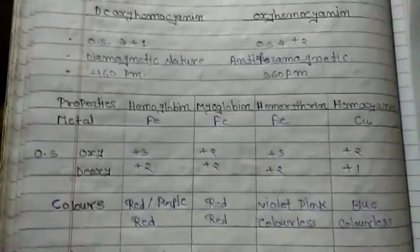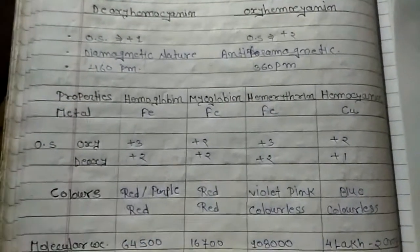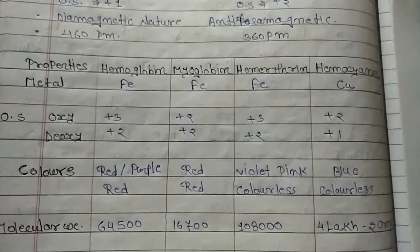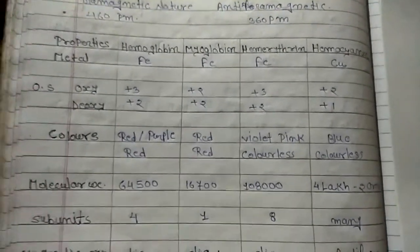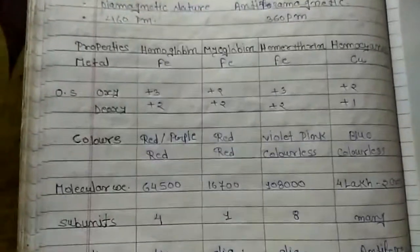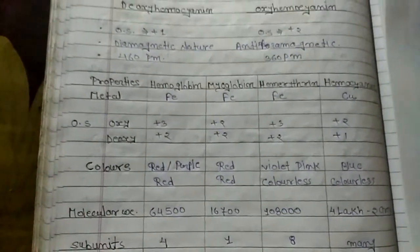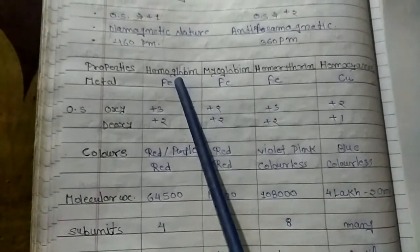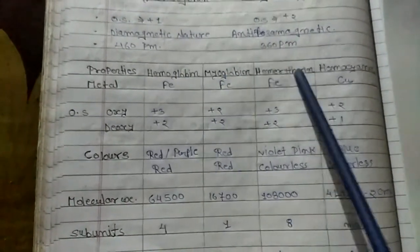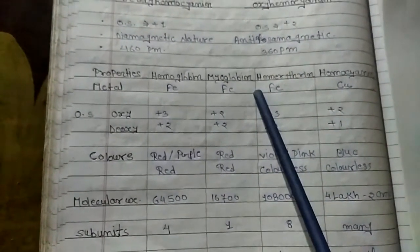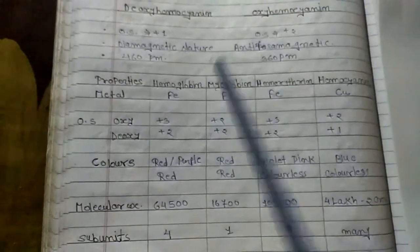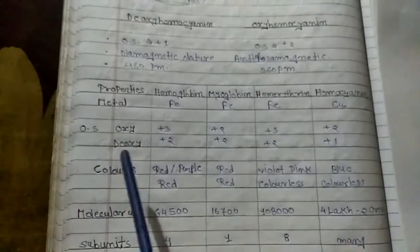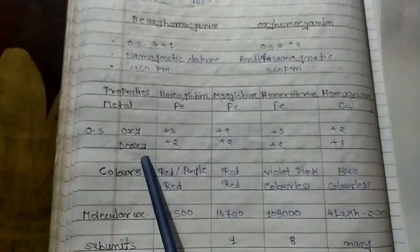Now let's compare all the proteins we've studied: hemoglobin, myoglobin, hemerythrin, and hemocyanin. Here's a simple chart. Hemoglobin, myoglobin, and hemerythrin all contain iron, but hemocyanin contains copper instead.